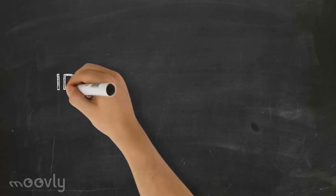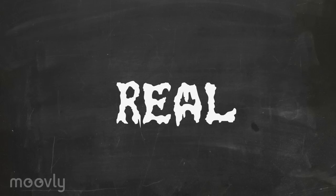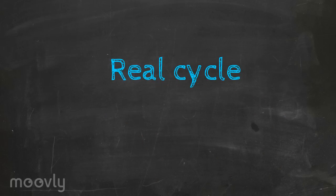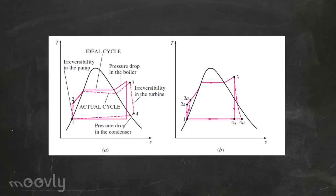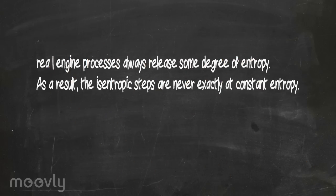As mentioned earlier, this is an ideal Rankine cycle. Real Rankine cycles operate slightly differently. In a real Rankine cycle, to harvest more energy, it is common practice to superheat the vapor before it expands. Real engines are not reversible processes. Therefore, as stated by the second law of thermodynamics, real engine processes always allow some degree of entropy increase. As a result, the constant entropy steps are never really constant.